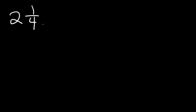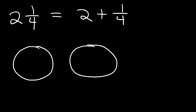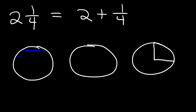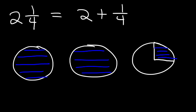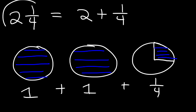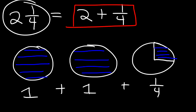So what exactly is a mixed number? Let's say we have the mixed number two and one-fourth. This is really the sum of a whole number and a fraction. Visually, imagine two circles and a quarter of a circle, all shaded — two whole shaded circles and a quarter of a shaded circle. That is equal to two and one-fourth, and that's the basic idea behind a mixed number.